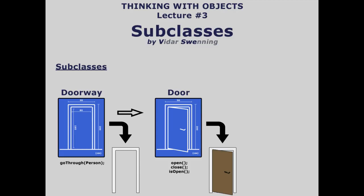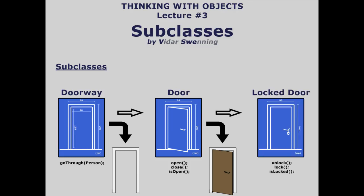We also have the problem of wanting a lockable door. We can extend Door further to have a locked version. So we have a doorway we can go through, a door we can open and then go through, and a locked door we can unlock, lock, and check if it's locked. There's no problem making subclasses of subclasses — you can chain them as deep as you want, which actually comes in handy.